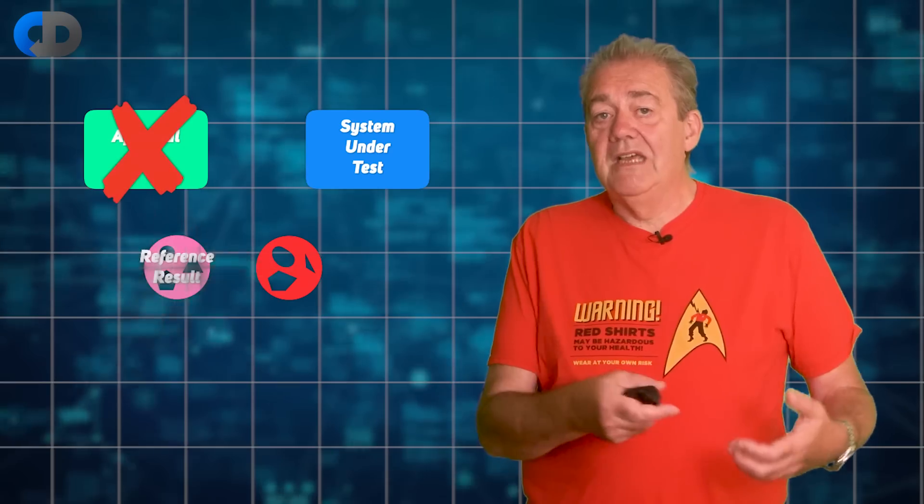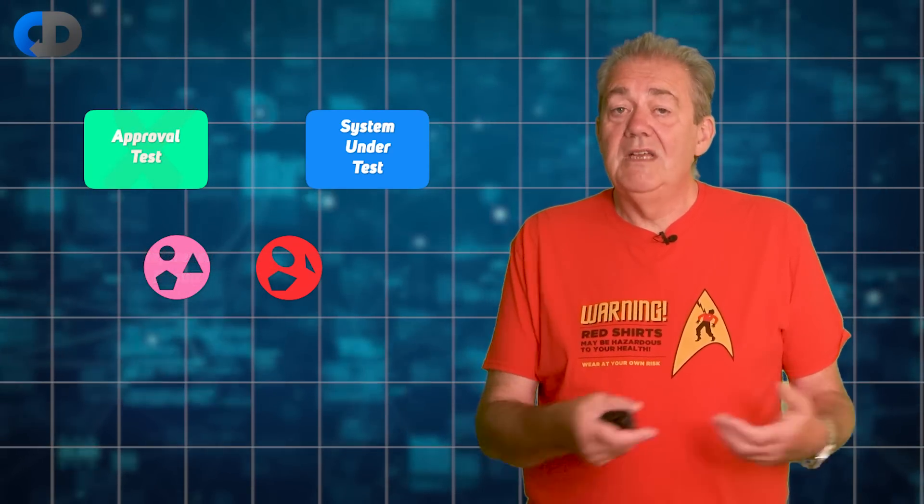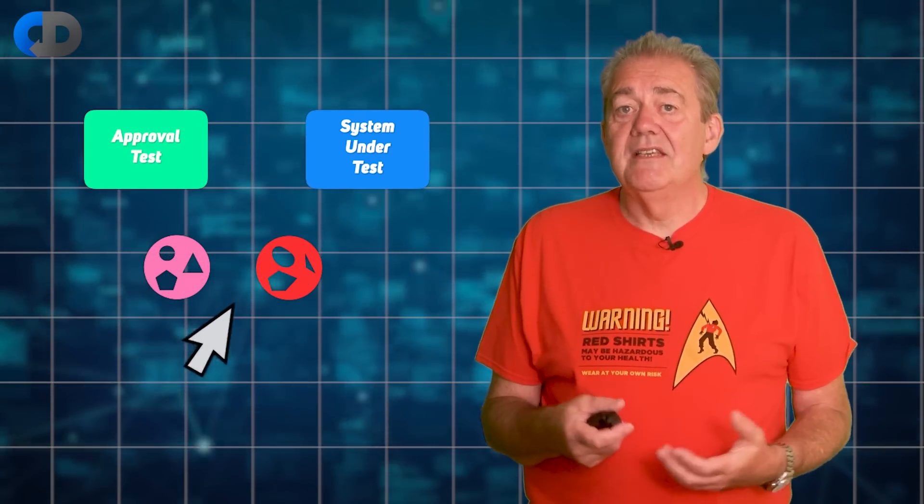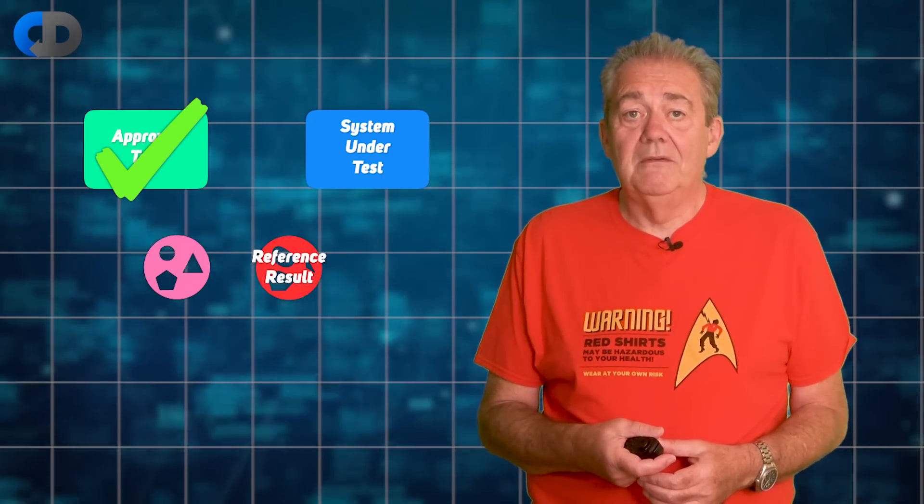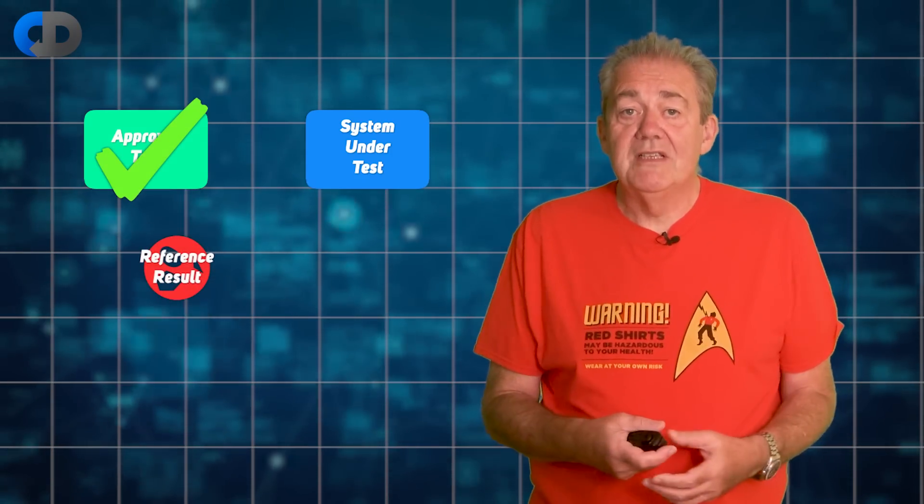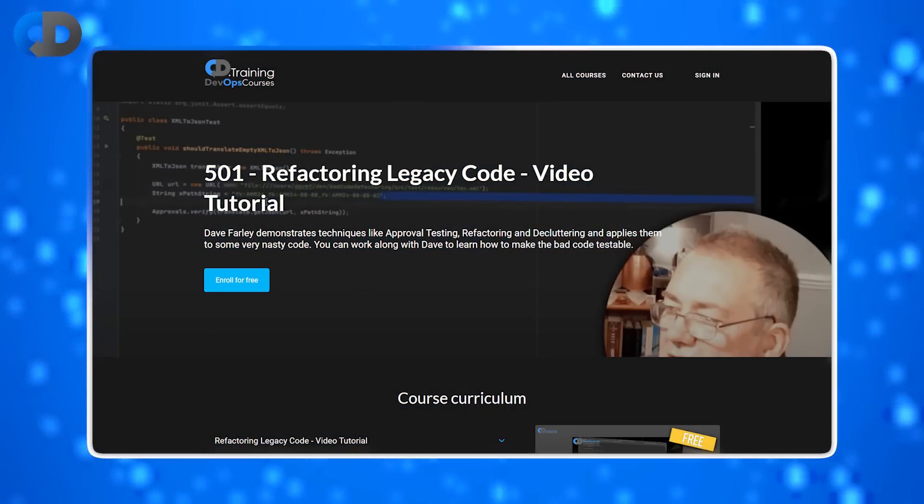If there's a difference the test fails. If not, it passes. This is fantastic as an easy way to stabilize code and is particularly valuable for code that we don't understand very well, to allow us to refactor it safely. Check out my free refactoring tutorial as an example of the use of this approach.